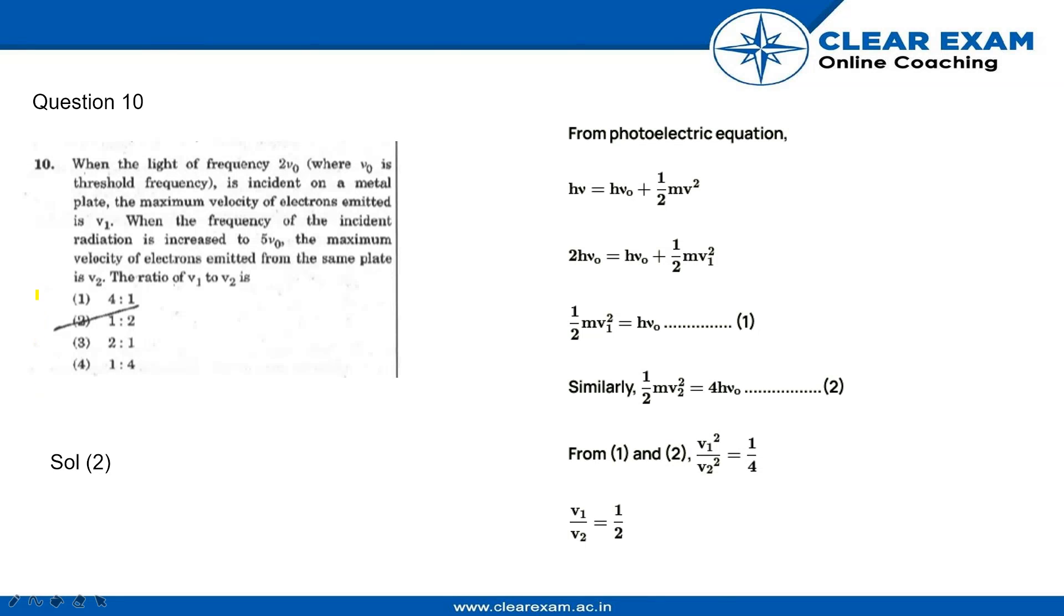NEET 2018 question number 10: When light of frequency 2ν₀, where ν₀ is the threshold frequency, is incident on a metal plate, the maximum velocity of electrons emitted is V₁. When the frequency of incident radiation is increased to 5ν₀, the maximum velocity of electrons emitted from the same plate is V₂.